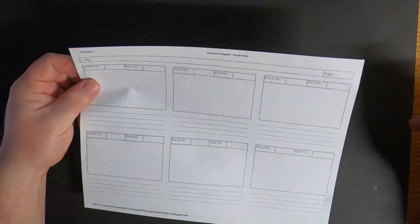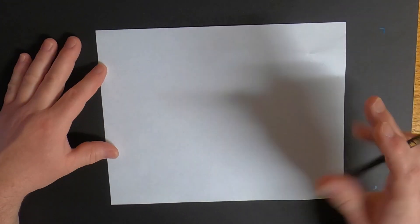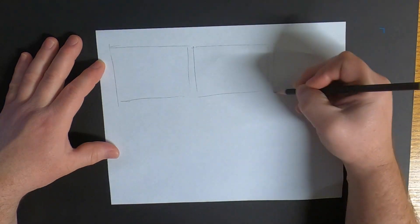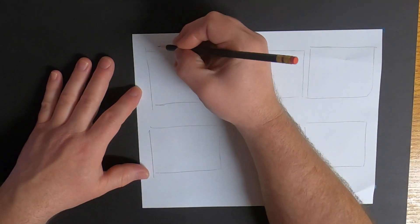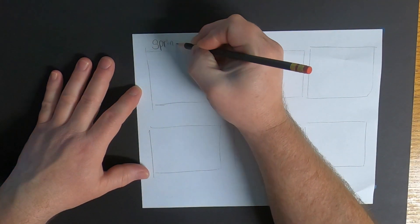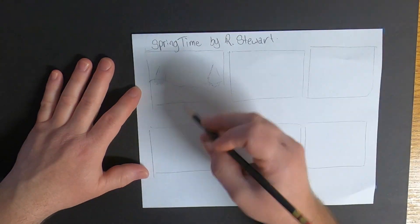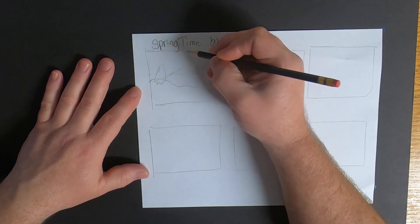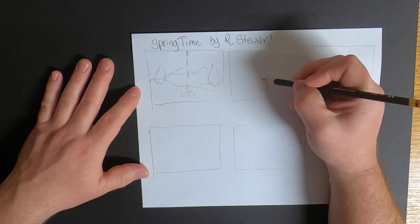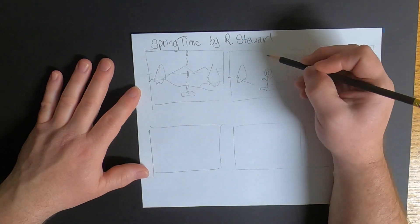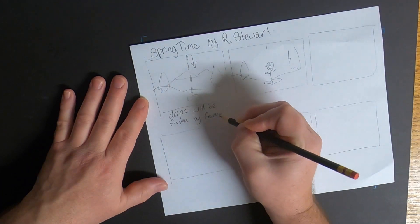The first thing we need to do is create a storyboard. You can get a fancy one online, or if you don't have that, just get a simple piece of printer paper and start creating a storyboard. A storyboard is essentially a comic or cartoon strip where you identify the story line, what things will be moving, and how. Get an idea of what you want your imagery to look like, and create pictures that show what will be happening in your animation.